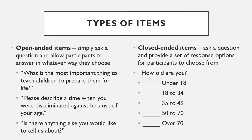Writing Survey Items: Types of Items. Questionnaire items can either be open-ended or closed-ended. Open-ended items simply ask a question and allow participants to answer in whatever way they choose. Examples include: 'What's the most important thing to teach children to prepare them for life?' and 'Please describe a time when you were discriminated against because of your age.'